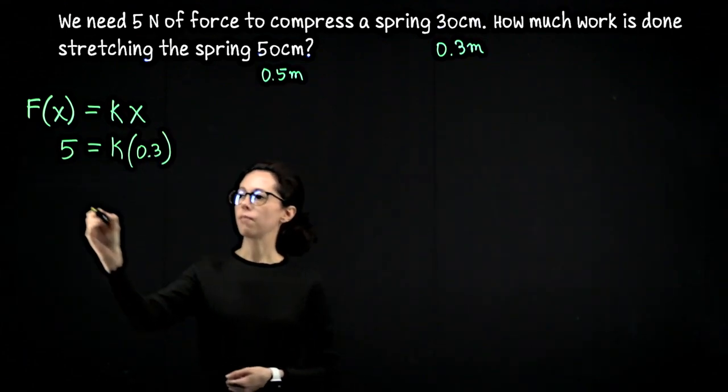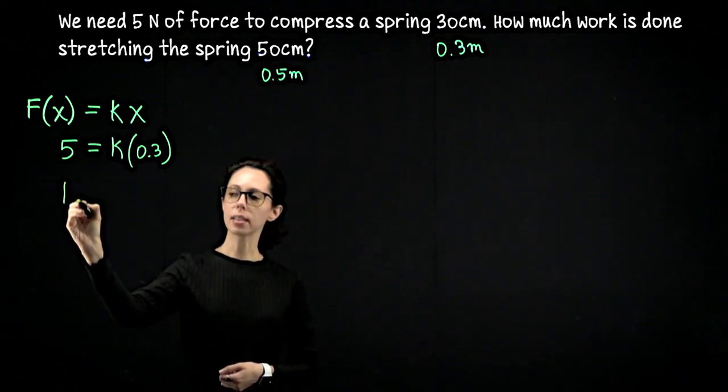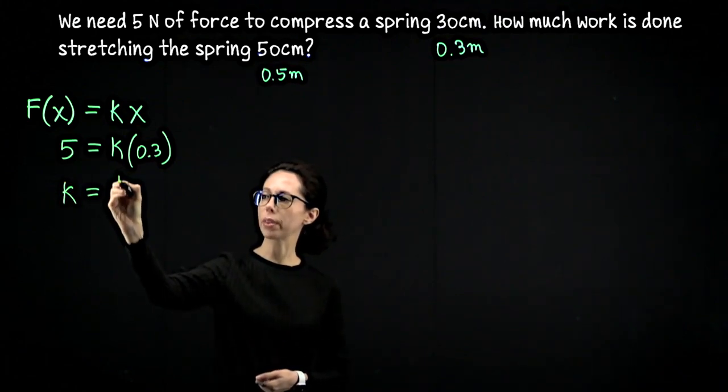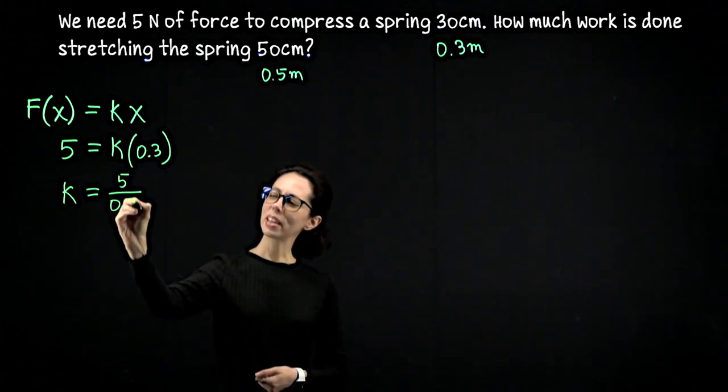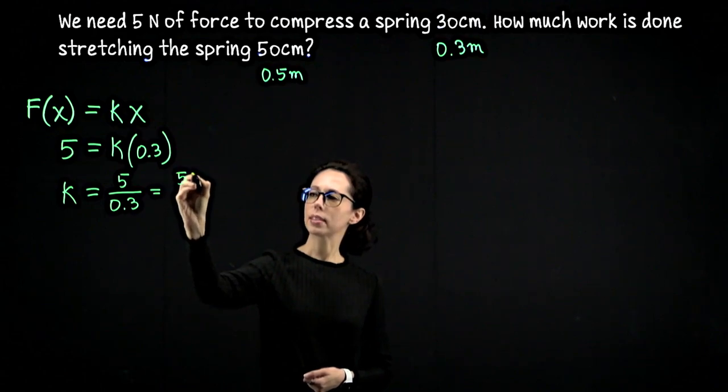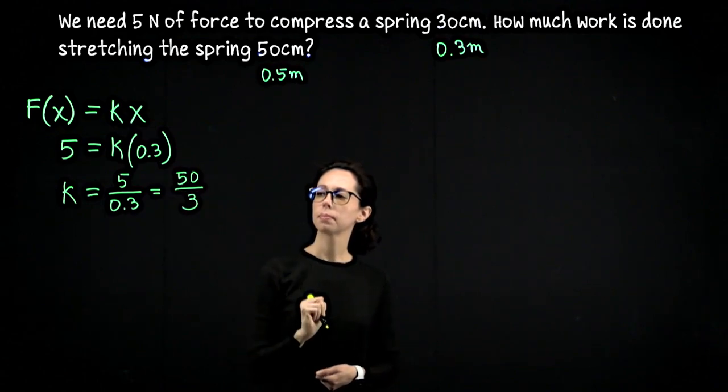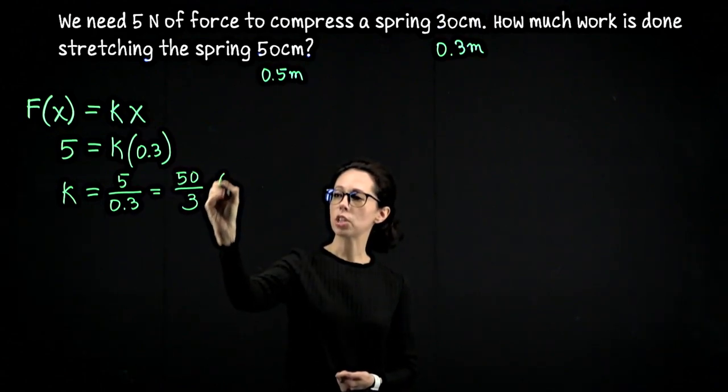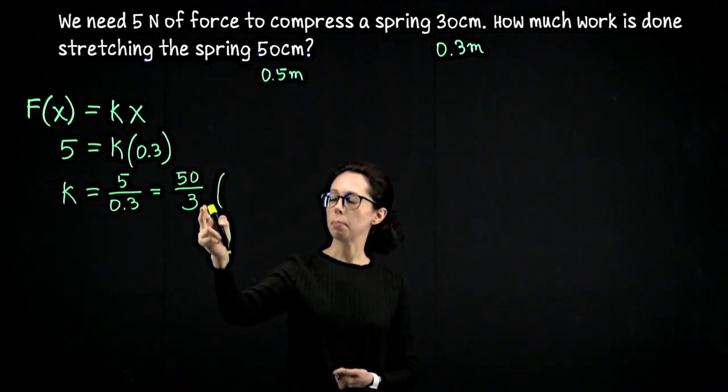So we can set up an equation for k like this. This tells us that for this particular spring, the spring constant is going to be k equals 5 divided by 0.3, which looks a little better if you multiply the top and bottom by 10, so I would prefer to write this as 50 thirds. The unit here would be newtons per meter.